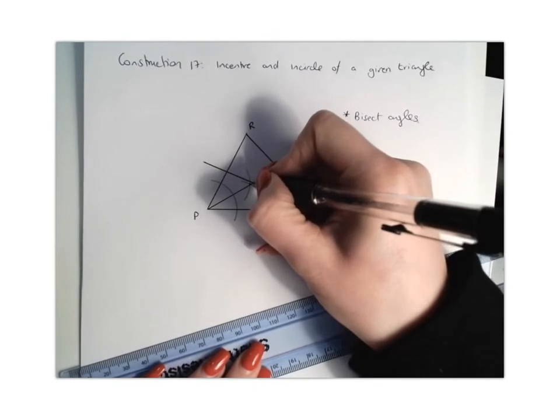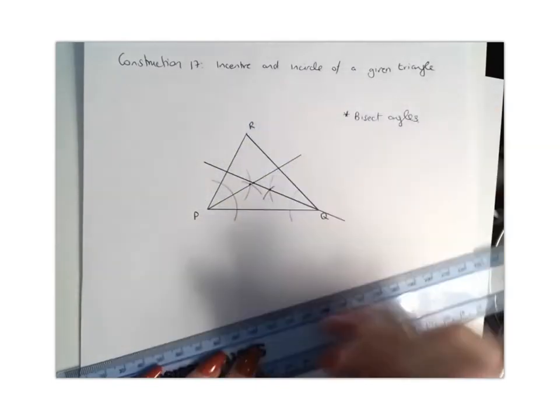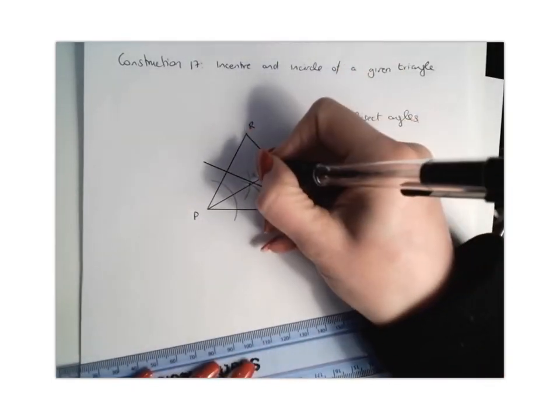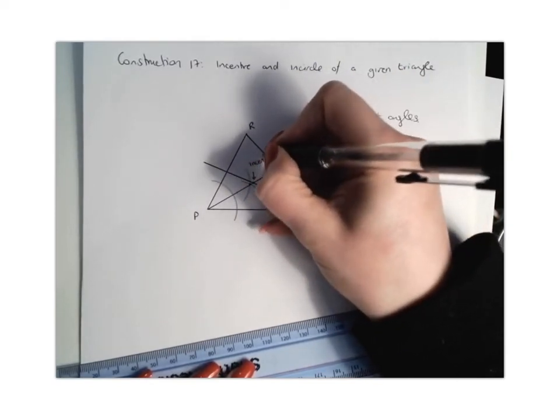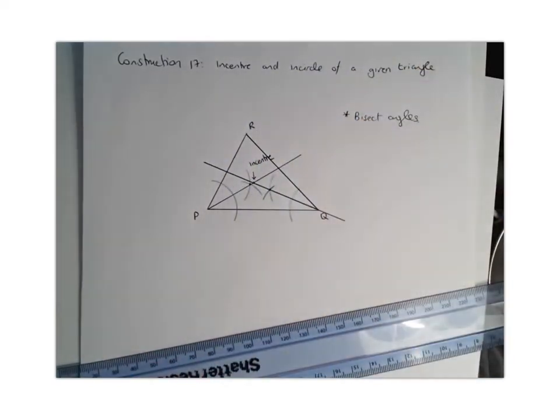And then you're going to mark this as your point of intersection. Okay, now that point of intersection right there represents your in-center. Okay, so that's the in-center of your triangle.